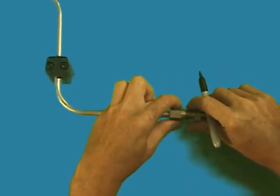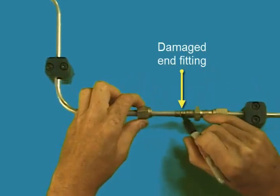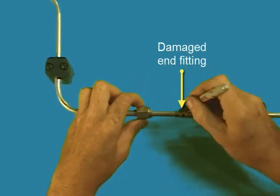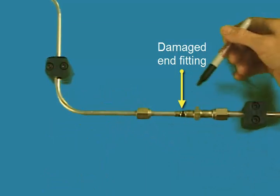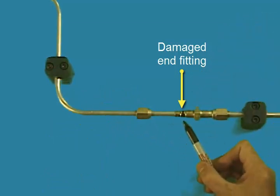In this case, we have a damaged end fitting, and that's one of the most common things we find - right where a union is, the tube will be leaking on the tube side of the fitting.